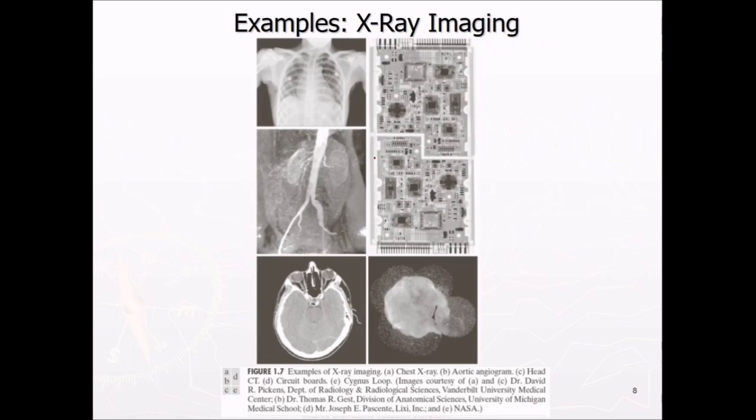This is x-ray imaging. This is a chest x-ray then we have this as aortic angiogram. This is head CT, CT scan of the skull head. These are the circuit bolts. These are cygnus loops. These are the use of x-ray imaging.